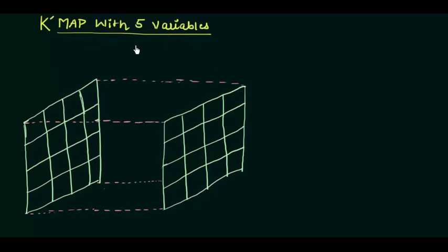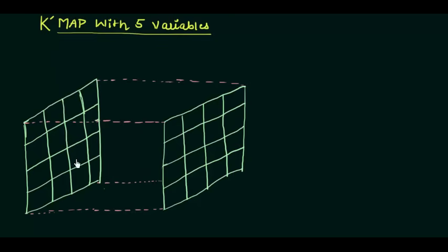This is our last presentation in the KMAP chapter, which covers KMAP with 5 variables. Till now we saw how to solve the KMAP for 2, 3, and 4 variables, including the don't cares and the max terms. After this presentation we will solve examples from competitive exams. So without wasting any time, let's move to the 5 variable KMAP. Every time when you have to solve the 5 variable KMAP, you need not make this structure because it's quite complicated, but we will see how to solve it.